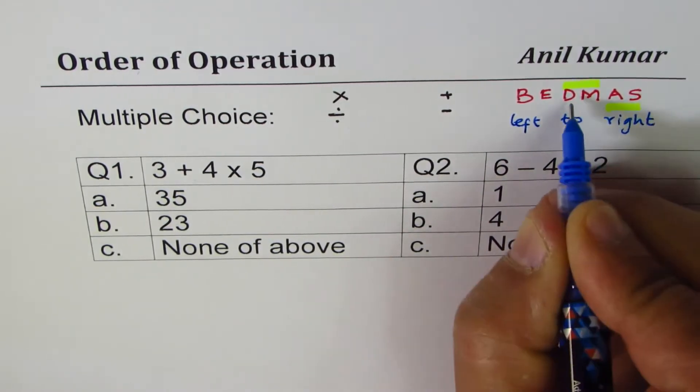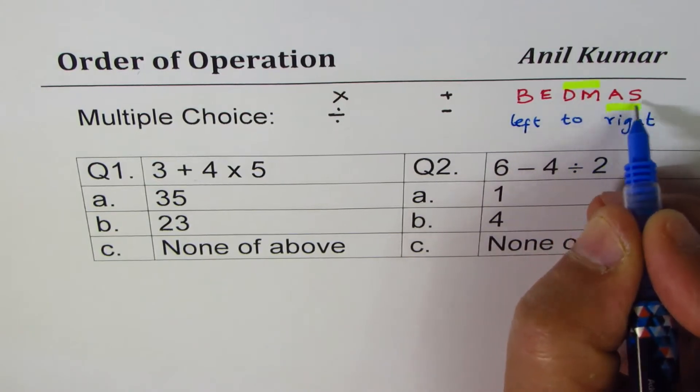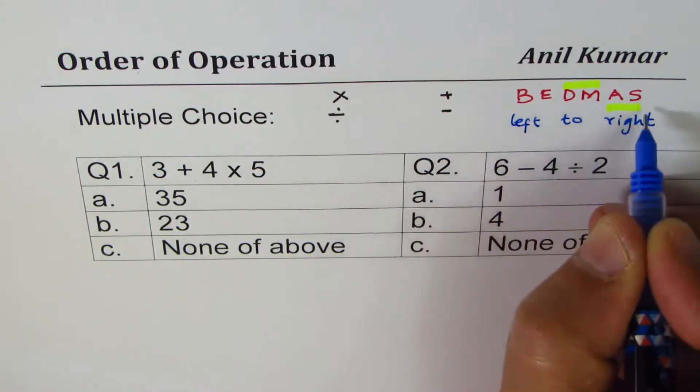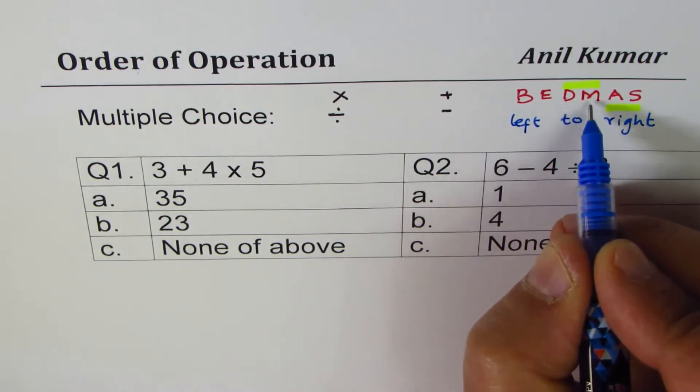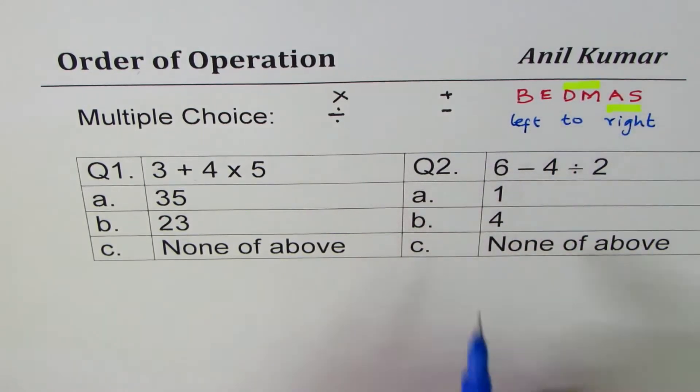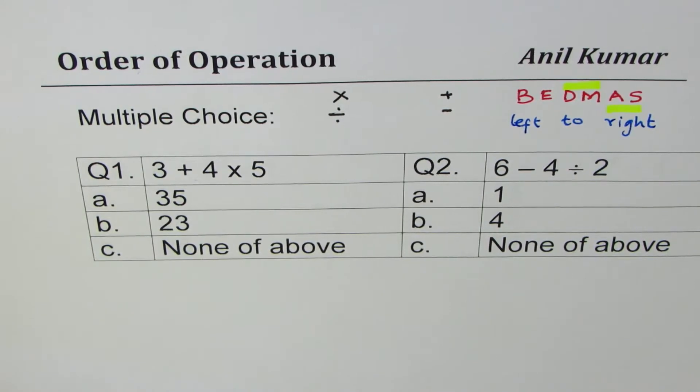Always do it from left to right. That's the real rule. These can be interchanged, but you should do left to right. So first thing is brackets, second is exponents, then division and multiplication, then addition and subtraction.